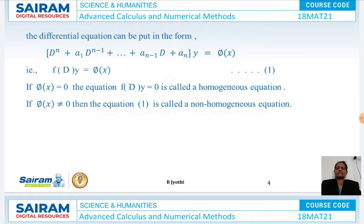If φ(x) = 0, the equation is homogeneous. If it is not equal to 0, it is non-homogeneous.